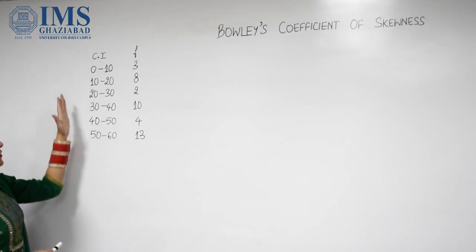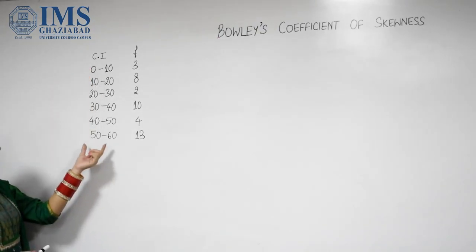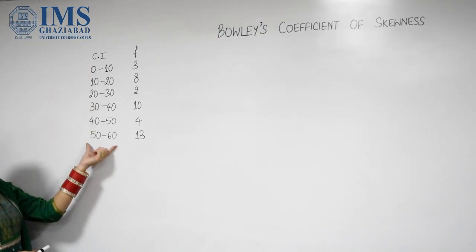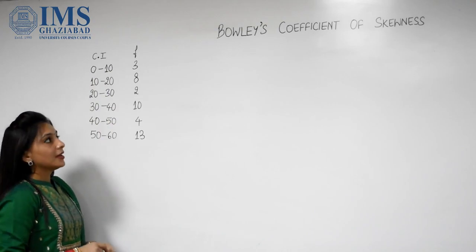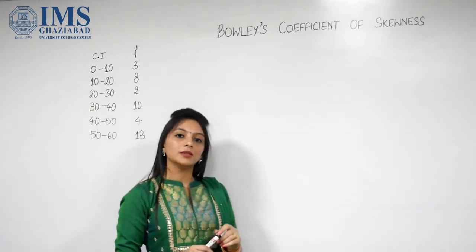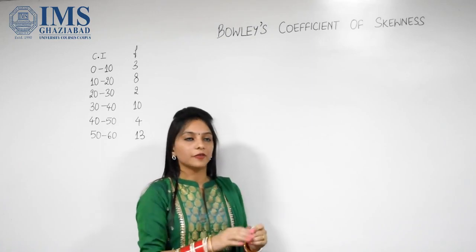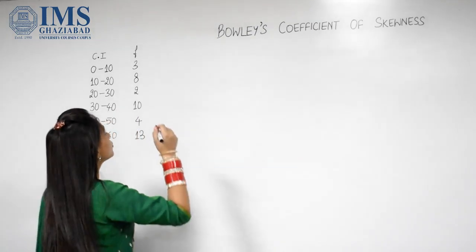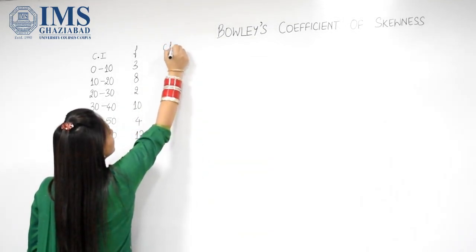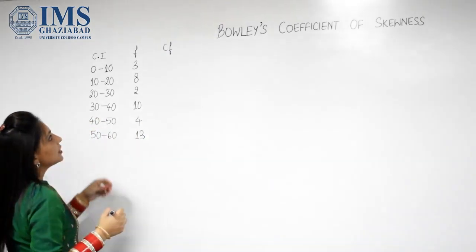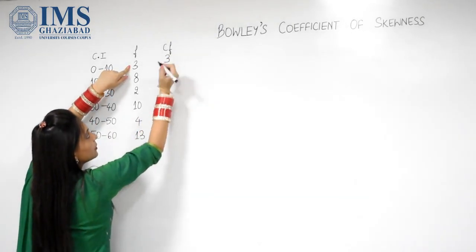The class intervals are given to us: 0 to 10, 10 to 20, up to 50 to 60. Frequency is already given to us. Now in order to calculate median or quartiles, the first step is to find CF — cumulative frequency. The first term will remain the same, which is 3.